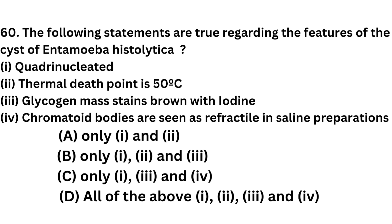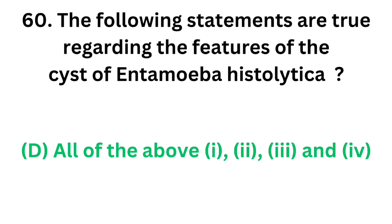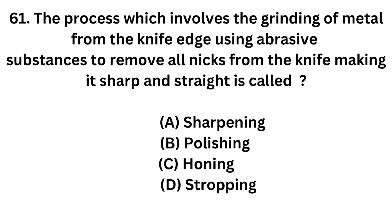Question number 60. The following statements are true regarding the features of cyst of Entamoeba histolytica: 1. Quadrinucleated. 2. Thermal death point is 50 degrees Celsius. 3. Glycogen mass stains brown with iodine. 4. Chromatoid bodies are seen as refractile in saline preparations. Option A: Only 1 and 2. Option B: Only 1, 2 and 3. Option C: Only 1, 3 and 4. Option D: All of the above. The correct answer is Option D. All these are features of Entamoeba histolytica — quadrinucleated, thermal death point 50°C, glycogen mass stains brown with iodine, and chromatoid bodies are refractile in saline preparations.